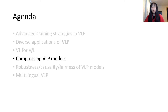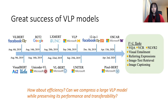We have now covered three topics: training strategies, diverse applications, and VL for V or L. The next topic is compressing VLP models. We are interested in the efficiency of VLP models — specifically, can we compress a large VLP model while preserving its performance and transferability? This is an important question, as in real-life applications large VLP models may not be applicable due to their slow speed and large storage size.